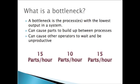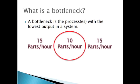Say we have a production cell with three stations. The first station makes 15 parts an hour. The second station only makes 10 parts an hour. And the third and final station also makes 15 parts an hour. The bottleneck would be the station in the middle — the process that is only outputting 10 parts an hour. Because the first and third are producing more, they're not the bottlenecks. It's the center process — it has the lowest output.